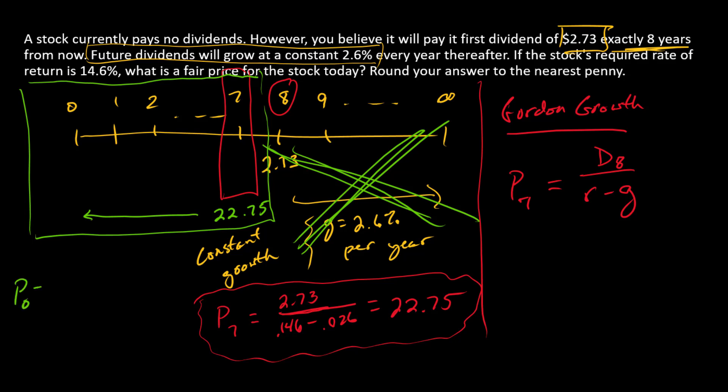So P0 here is going to be $22.75 divided by one plus my discount rate raised to what power? The seventh power, because it is a time seven cash flow.